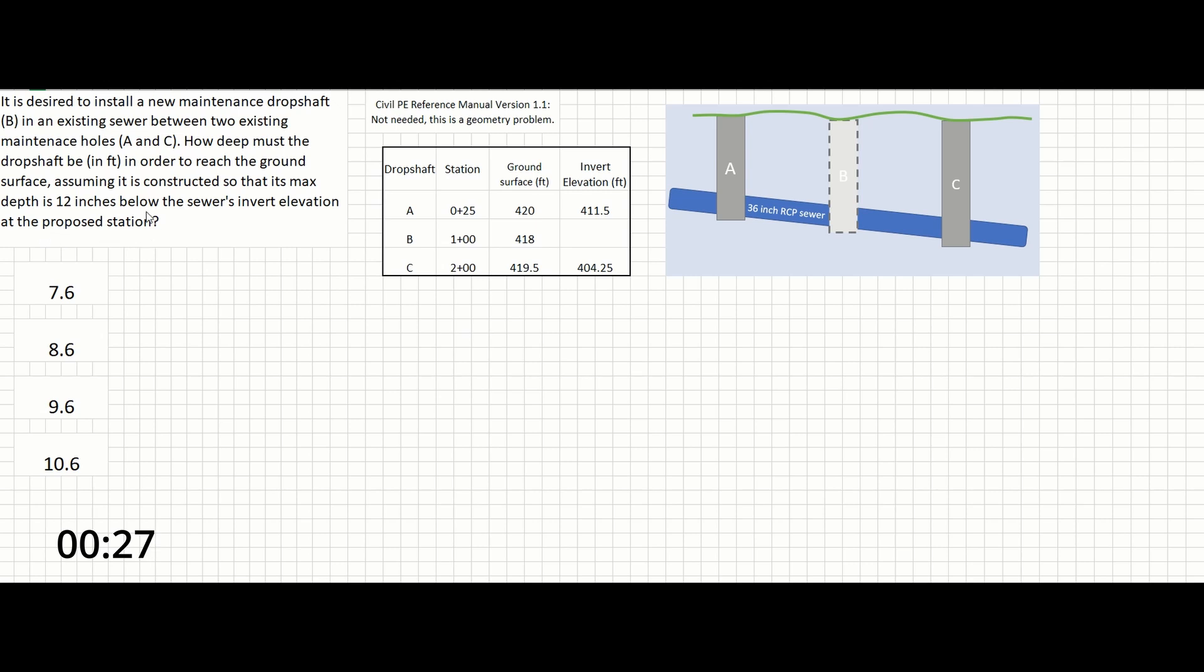So the first thing that we can note about this problem is that you don't need the manual. We just need to use geometry here. We can take a look at what we've been given. We have drop shafts A and C, as well as the proposed drop shaft B. This is a 36-inch RCP sewer, and this is the ground surface up top. The table here gives us the stations and the ground surface elevations for all three of our drop shafts.